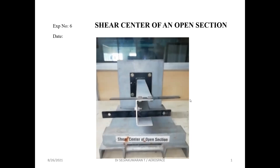If you look at the section, in these two holes we are going to place the weight angles so that we can add the weights. We are going to add the weights here. I call this distance as AB. We are going to use our formula, and we call this distance AB.